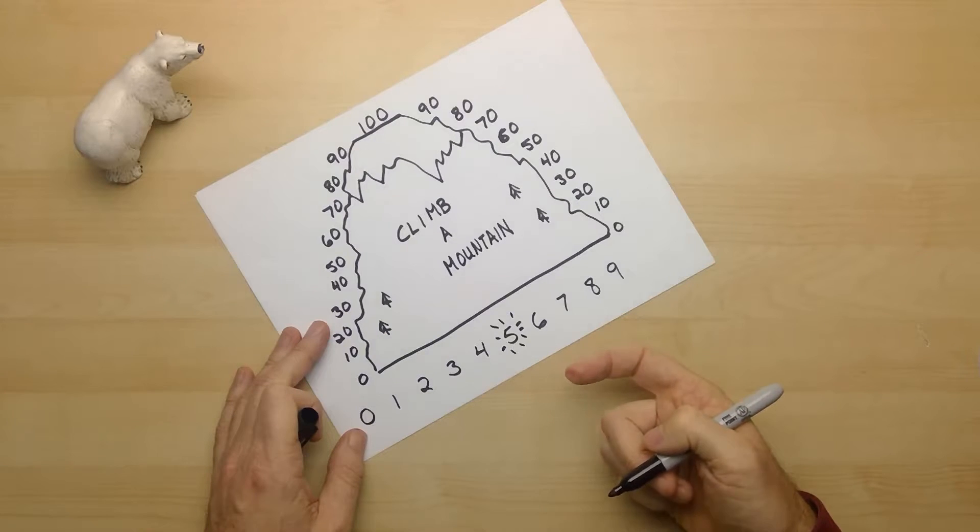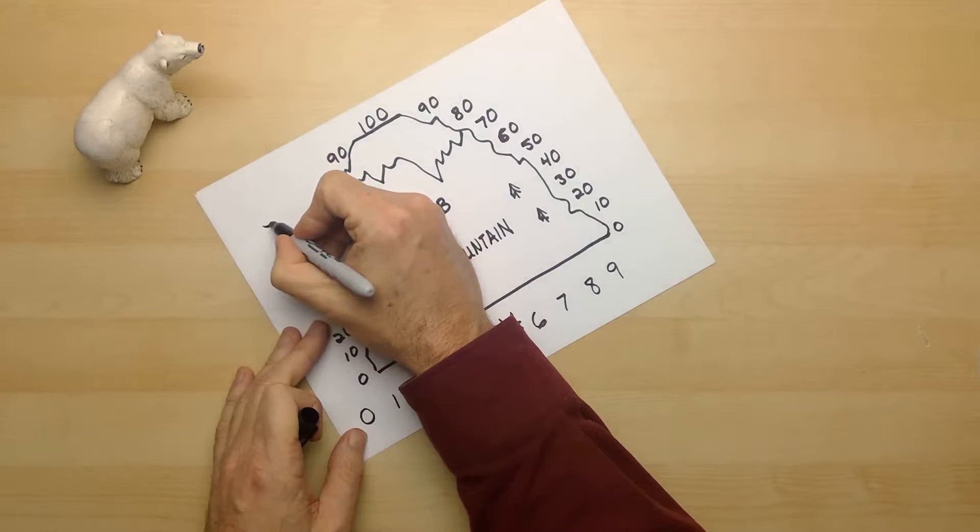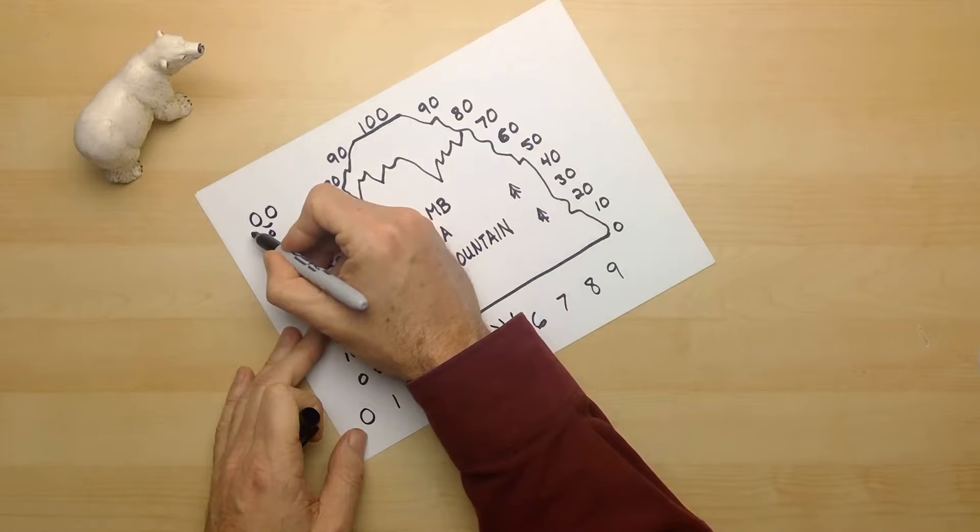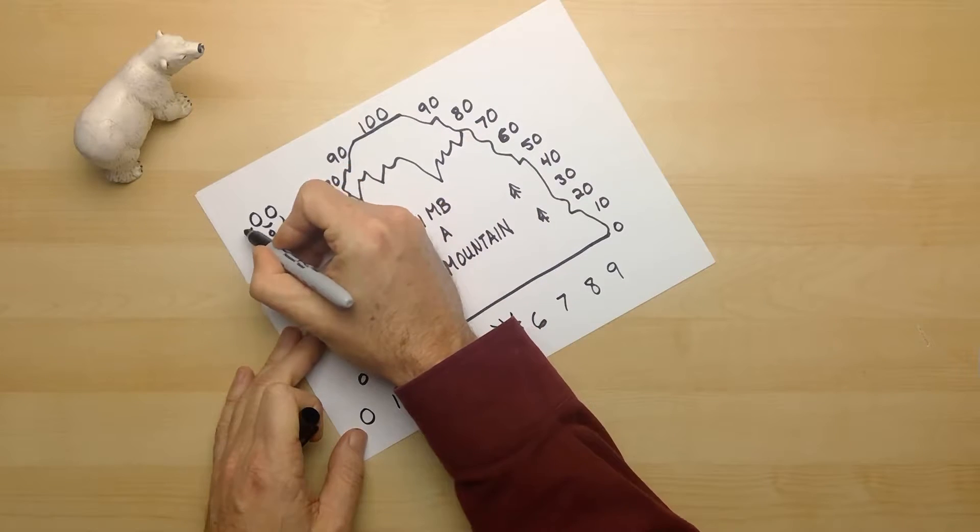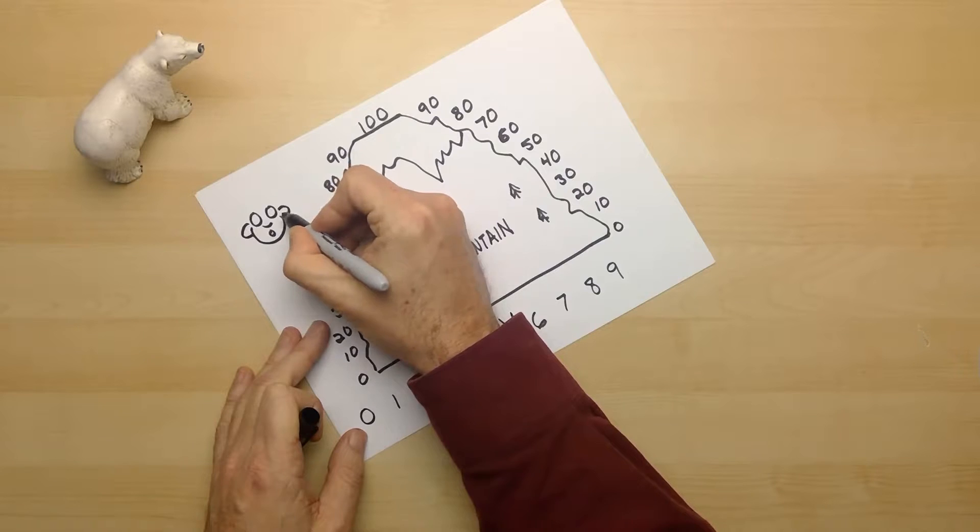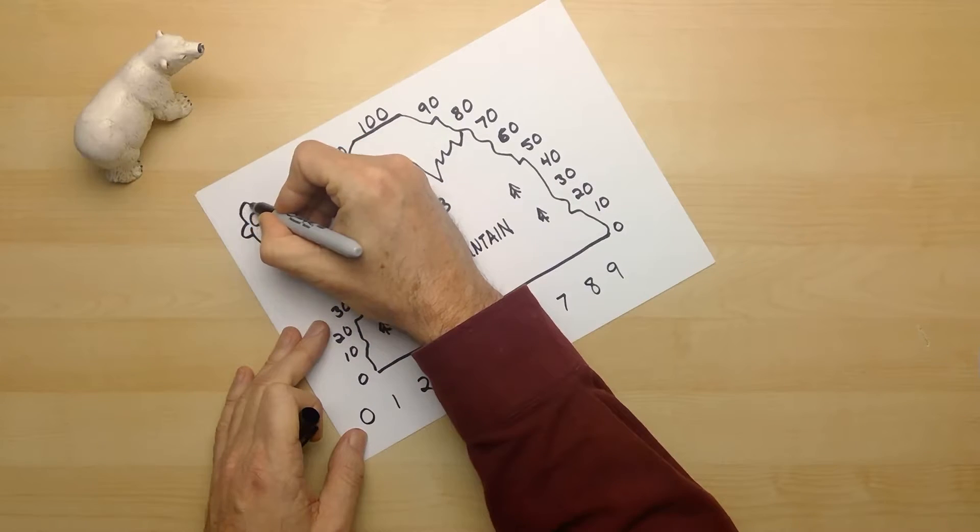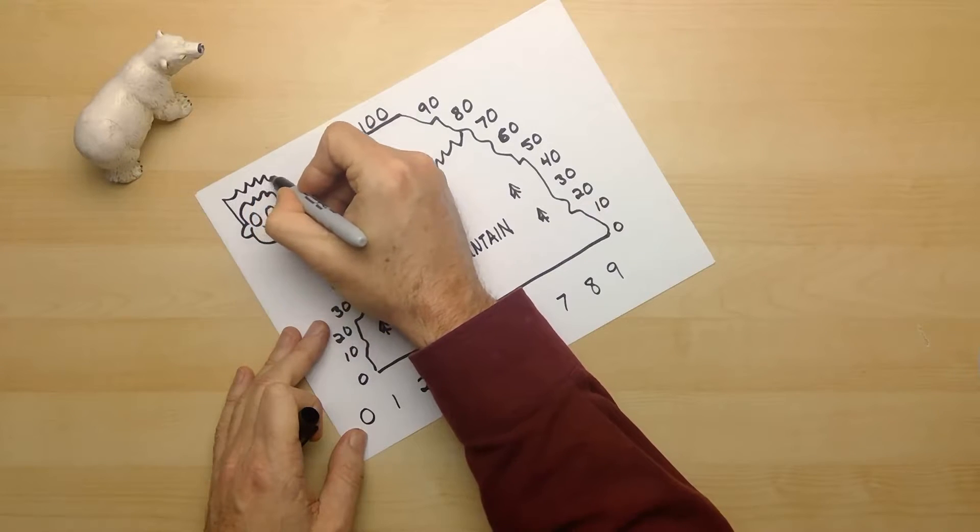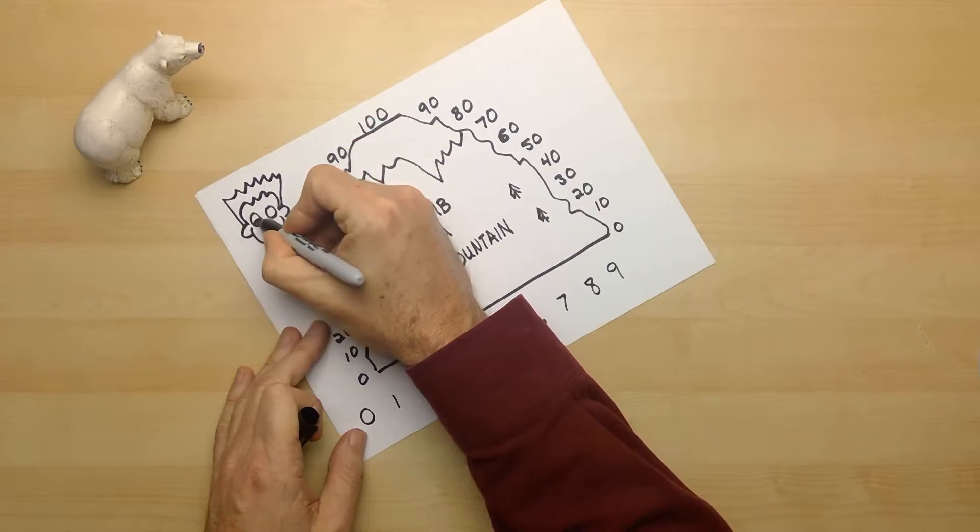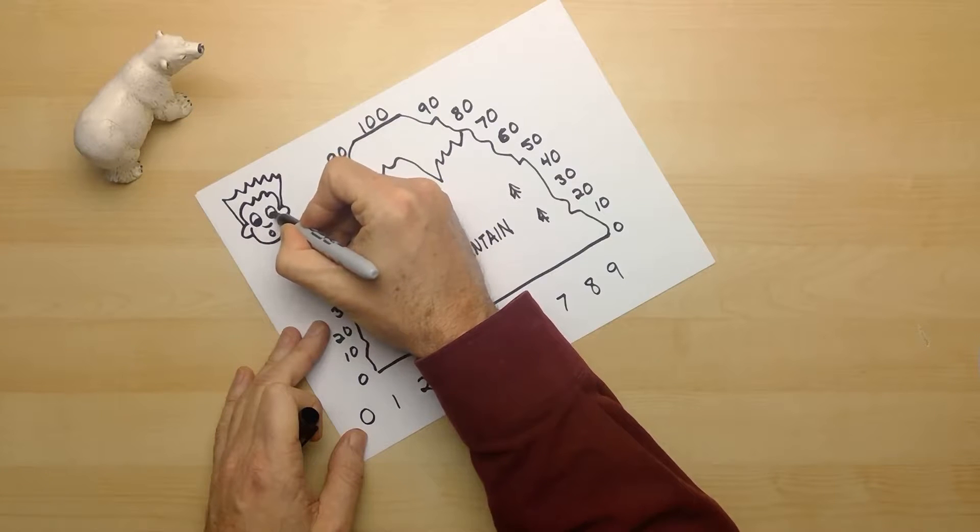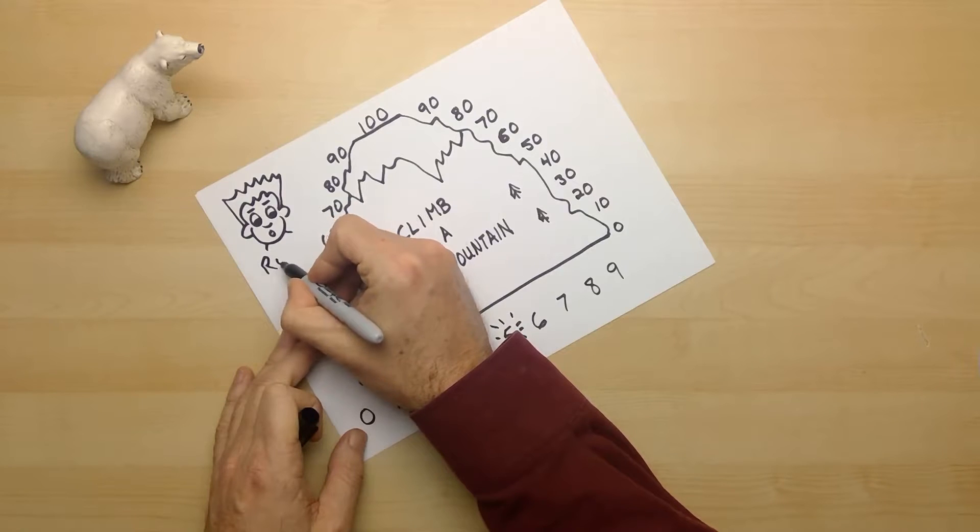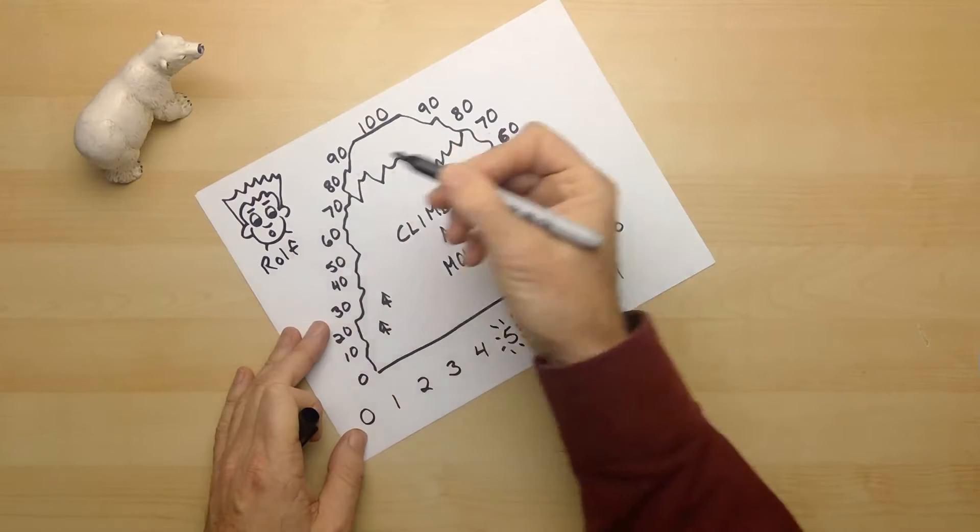Now we need a couple players. Over here, let's see, a little curve here, a couple round circles, and one there too. Maybe a curve underneath, and maybe an ear, and then maybe some hair. I've got to have some eyes, right? And eyebrows. And this person is Rolf, one of the players.